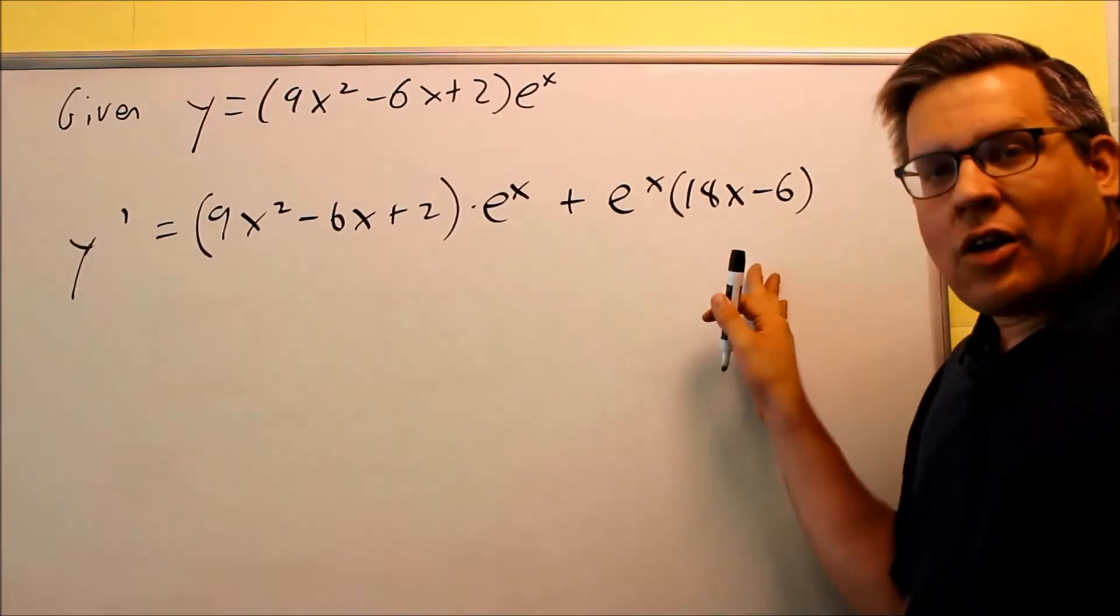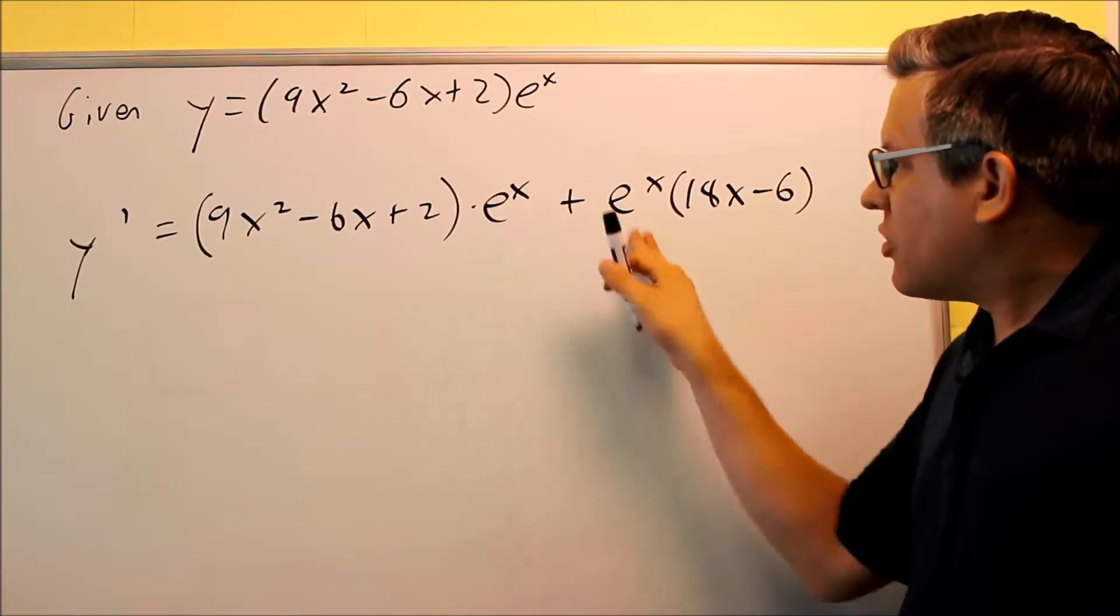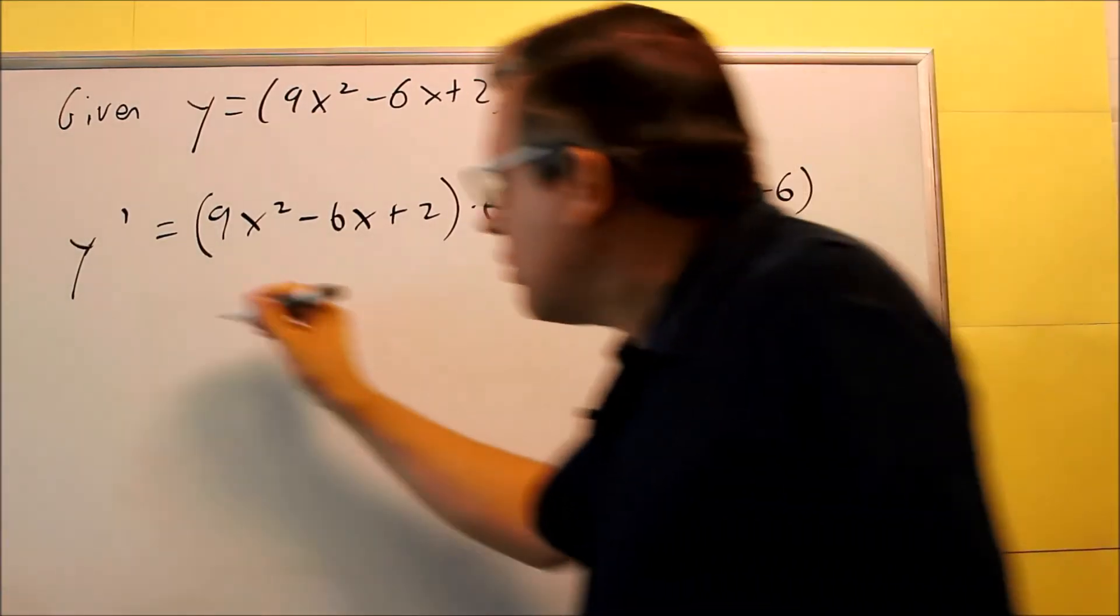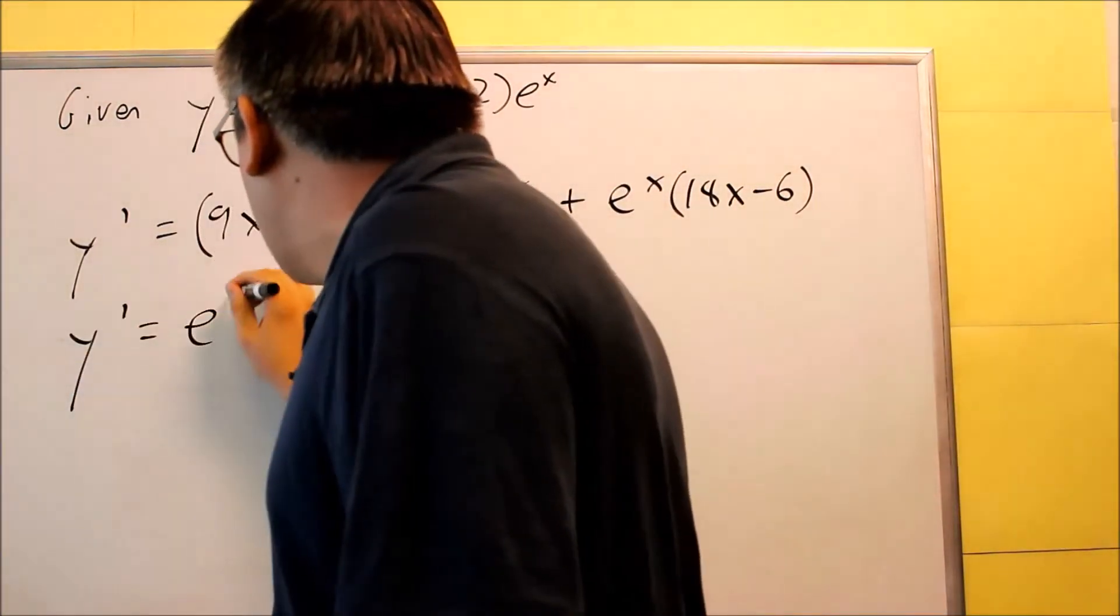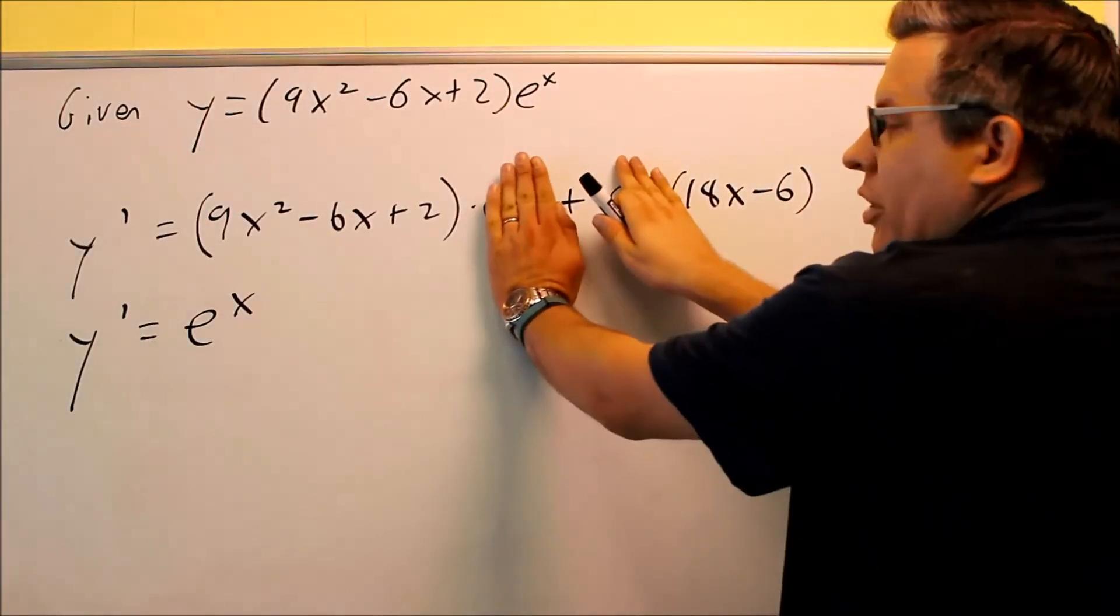Now instead of multiplying all this out, that might make it more complicated, I want to do a factoring step here because I notice that there's an e to the x that's common in both of those. So what I'll do is I'm going to factor out the e to the x from both of those. If I get rid of the e to the x's,